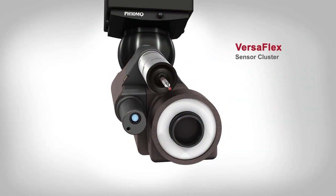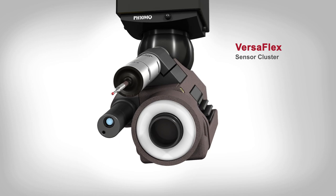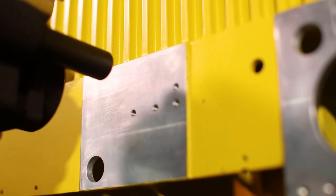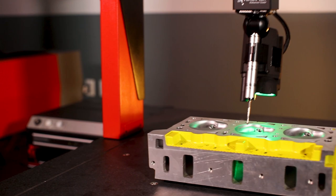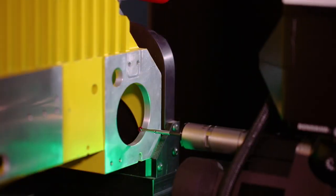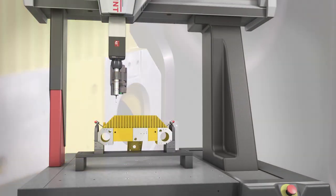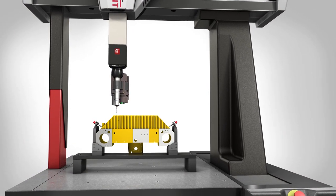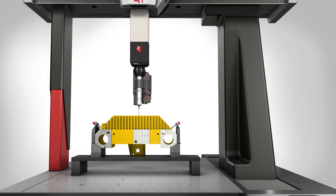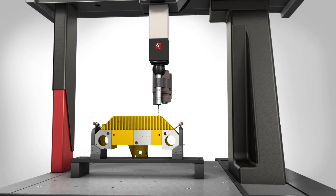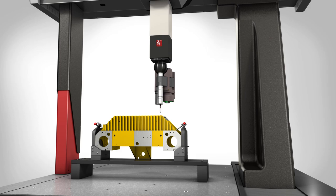The Versaflex sensor cluster allows up to three sensors to be simultaneously available, allowing all aspects of a part to be measured without the need for complicated tooling or rotary stages, reducing both cost and uncertainty for measuring large components. The Versaflex sensor cluster offers a long working distance for all sensors for convenient access anywhere on the part.